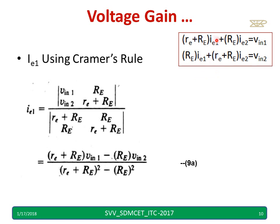These are the equations from the previous slide. To calculate IE1 using Cramer's rule, I set up the numerator with RE plus RE and VIN1, VIN2, and the denominator with all four matrix parameters: RE plus RE, RE, and RE plus RE. After multiplying and subtracting cross terms, I obtain IE1. You can pause and try to follow the steps.